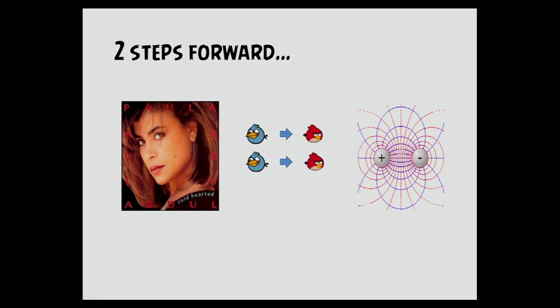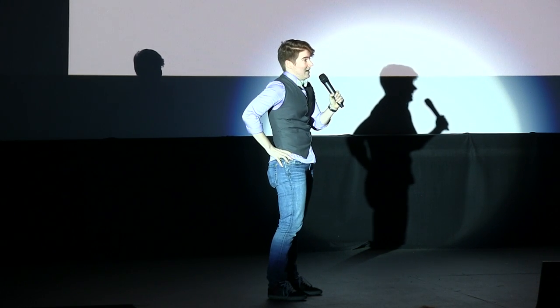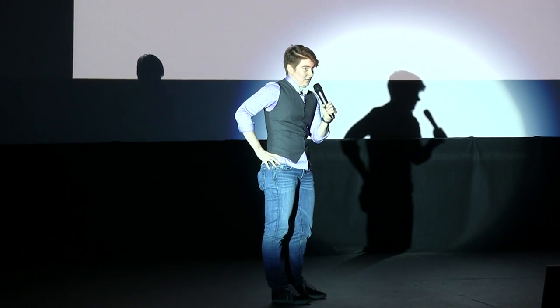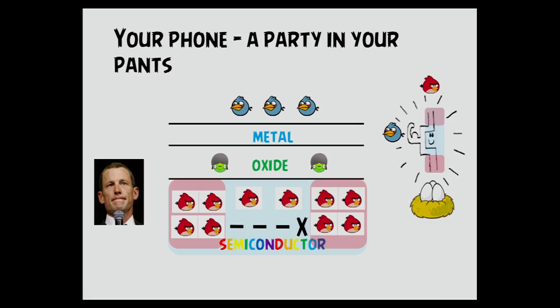Which brings me to an important principle of semiconductor physics: the Paula Abdul principle. Opposites attract. And when opposites attract, they make dipoles. Electric dipoles make electric fields. And when the electric field in this field effect transistor is high enough, then we have conduction. This is super exciting. We have enough electrical energy to get the birds from the top of the transistor to the bottom so they can rescue their eggs. This is really awesome.